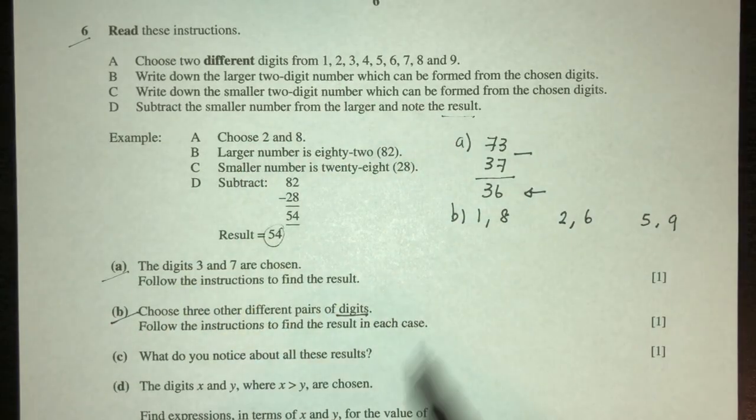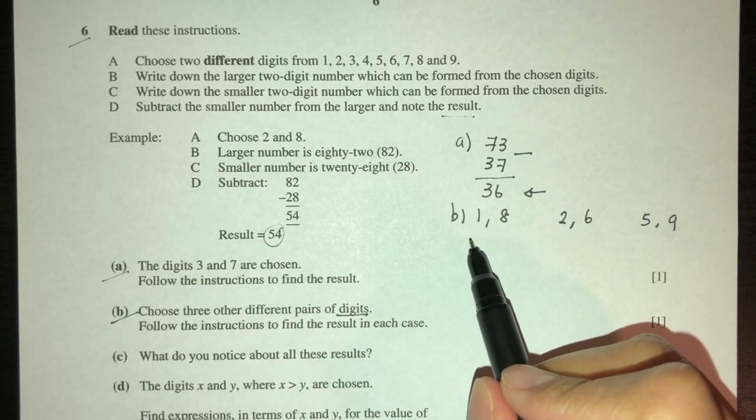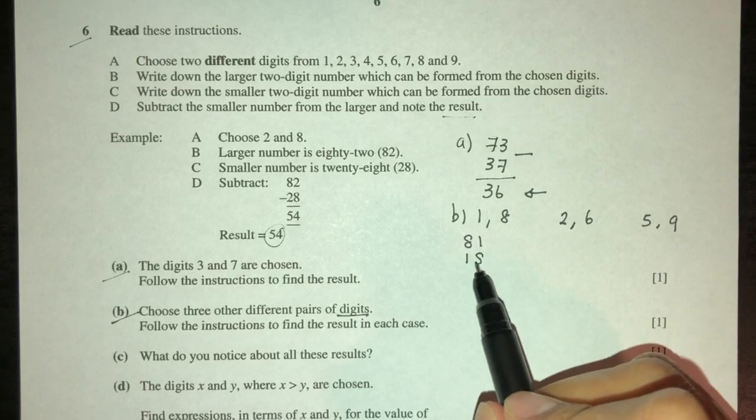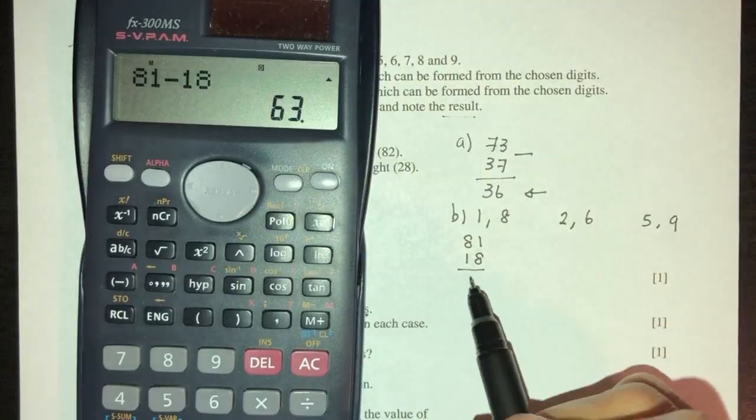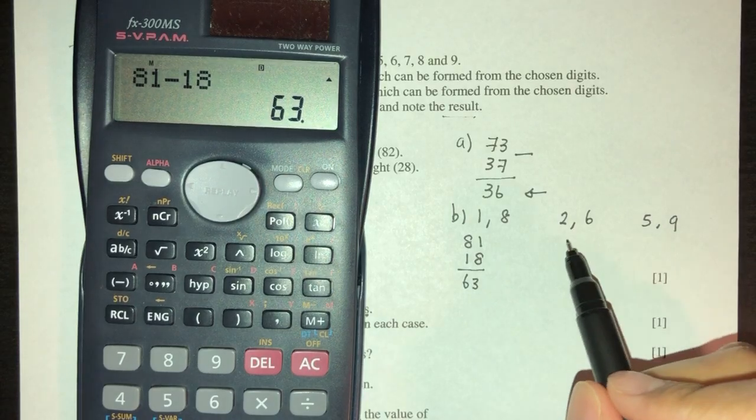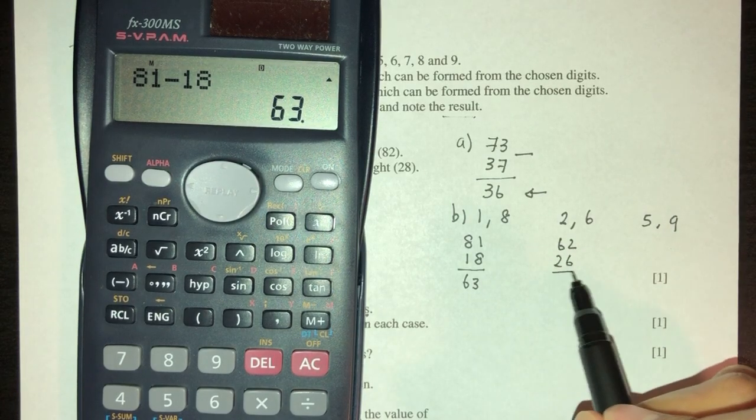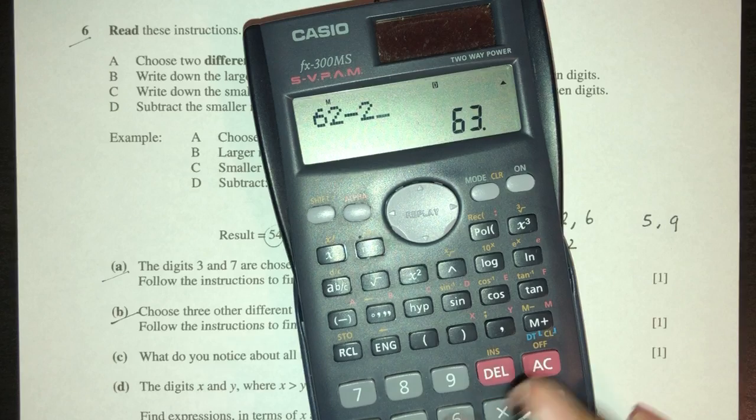So for this first one, the larger will be 81, smaller will be 18, so 81 minus 18, that will be 63. Here we have 62 minus 26, so 62 minus 26, that will be 36.